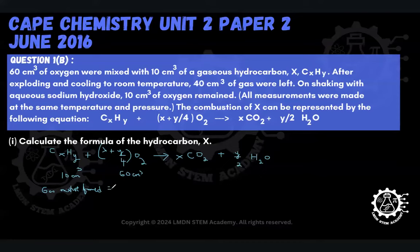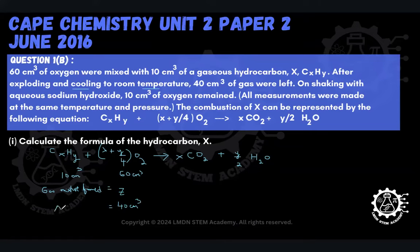They didn't tell us what the entire volume was that was formed. But after we cooled down to room temperature — imagine we're condensing off some of the steam we made — that volume Z then becomes 40 cm³. So after we cool down and condense, we have 40 cm³.